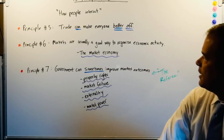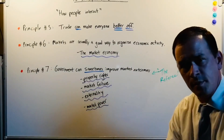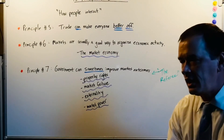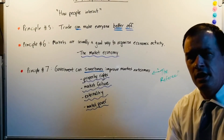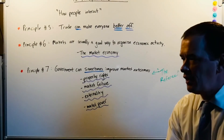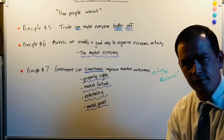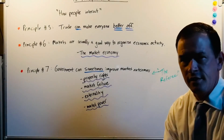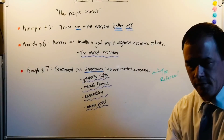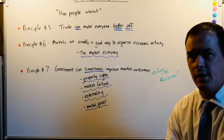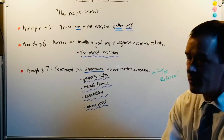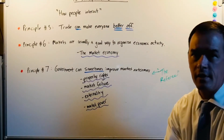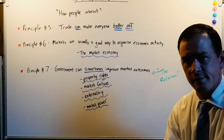The government can sometimes improve market outcomes as the referee, and we know those market outcomes come from a market economy. Whether it's trade between me and Bangladesh, Florida for citrus, or South Carolina and California through tourism — trade can make everyone better off. This is how people interact under the broad 10 principles of economics.